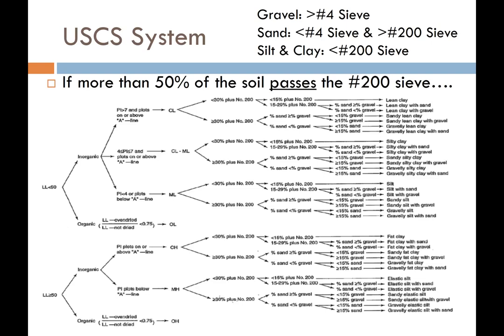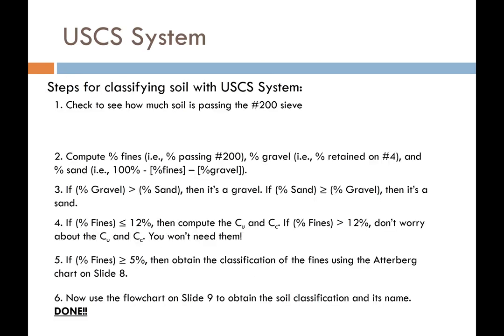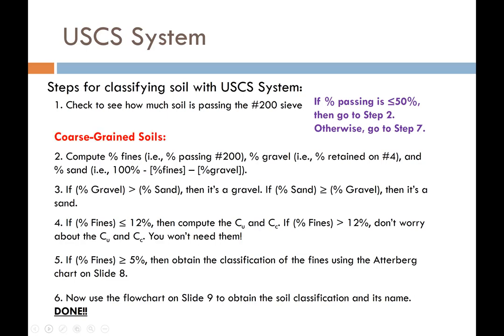Here are the steps for the Unified Soil Classification System. Step one: check how much soil is passing the 200 sieve. If 50% or less passes, you have a coarse-grained soil — go to step two. Otherwise, go to step seven for a fine-grained soil. For coarse-grained soils, compute the percent fines — that's percent passing the number 200 sieve — the percent gravel, which is the percent retained on the number four sieve (or one minus the percent passing the number four sieve), and finally percent sand.